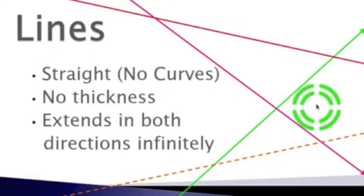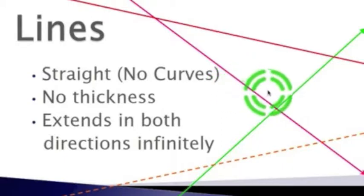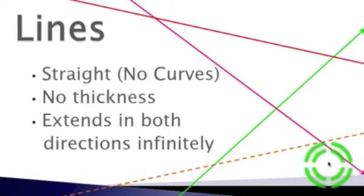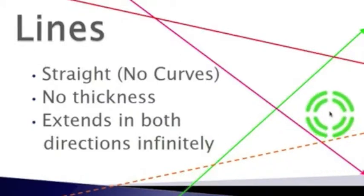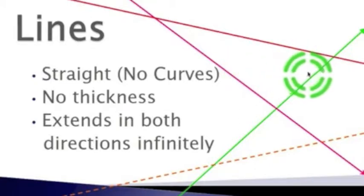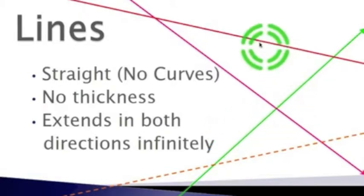The next type of geometry we are going to talk about are lines. It is important to note that lines must be straight — there are no curves, they have no thickness, and they extend in both directions infinitely. These lines have arrows on both ends, meaning they go on forever with no stopping point, just like on graphs showing data that does not stop at a certain point.